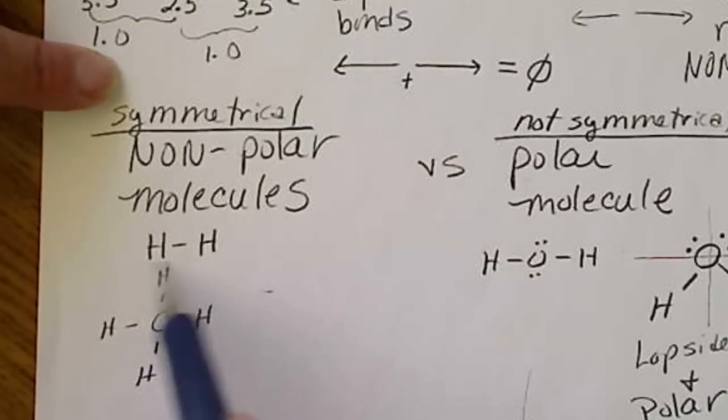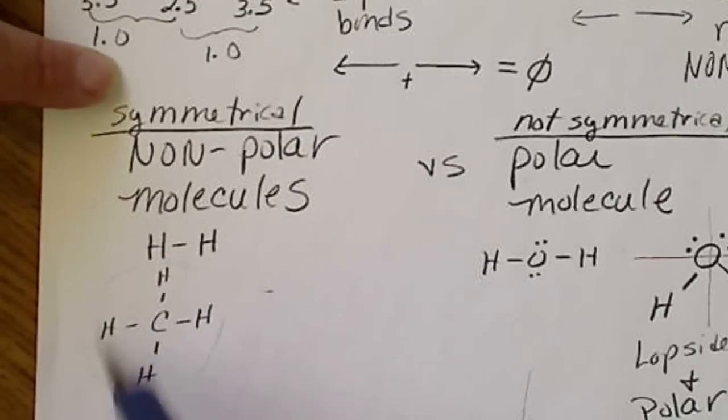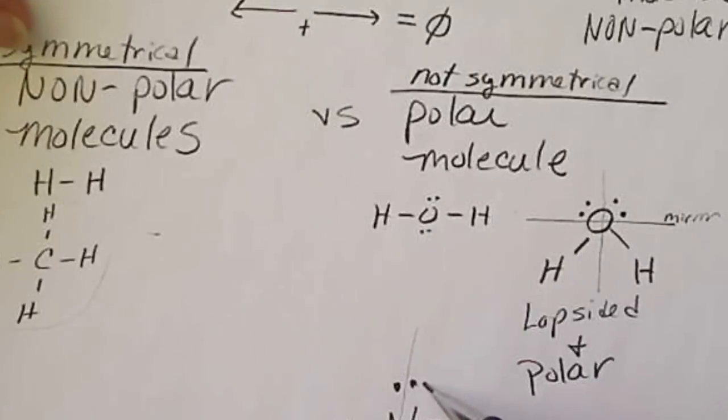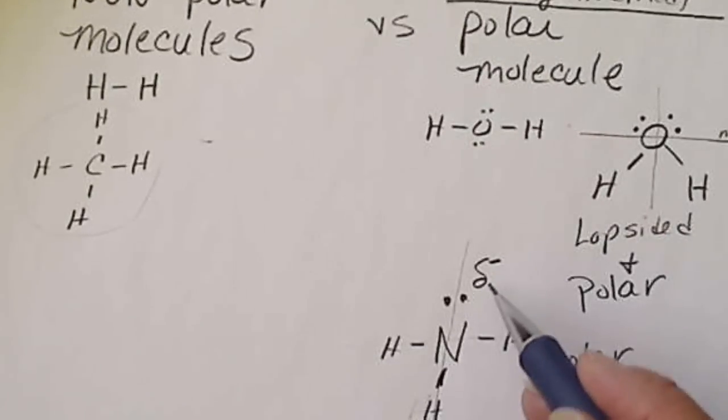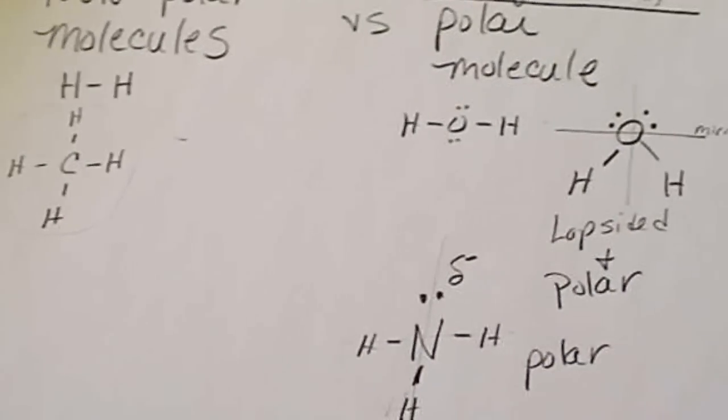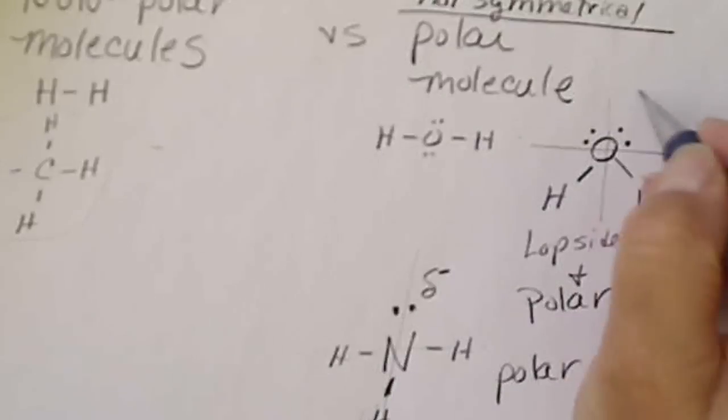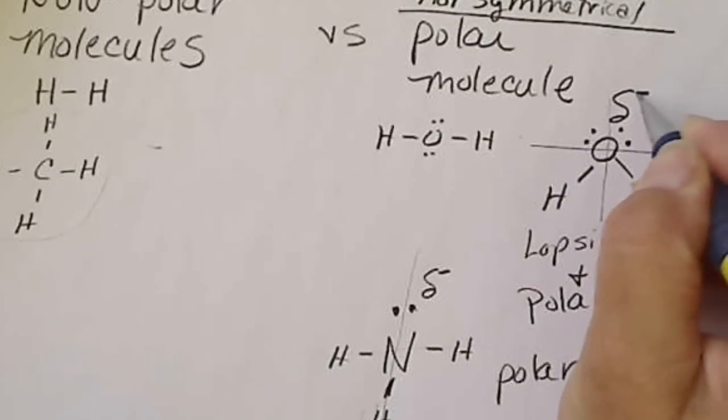If it's symmetrical, that means the electrons are distributed evenly throughout that molecule. We don't have a negative side of the molecule. The negative side of the molecule comes from where the majority of the electrons are.